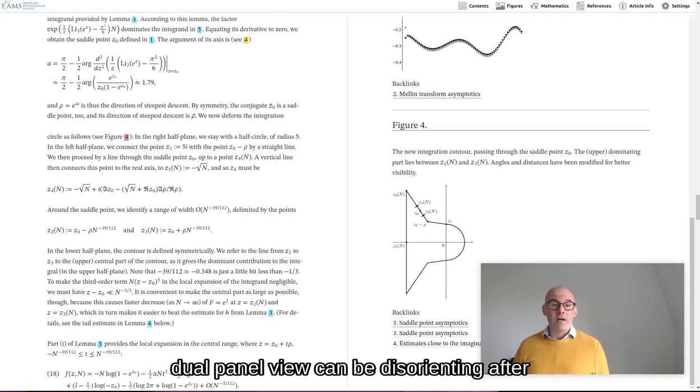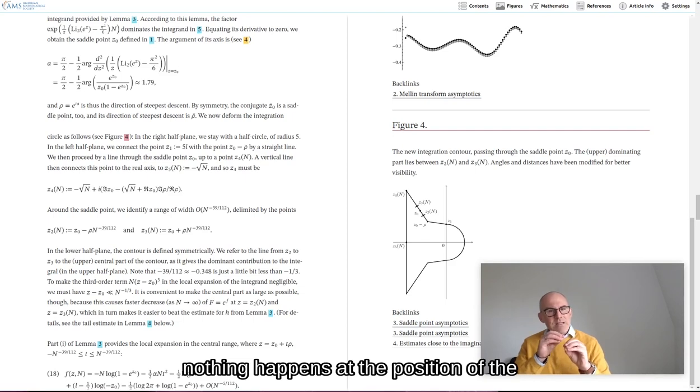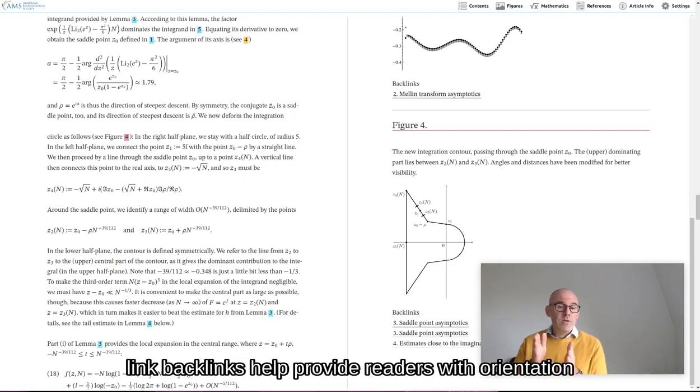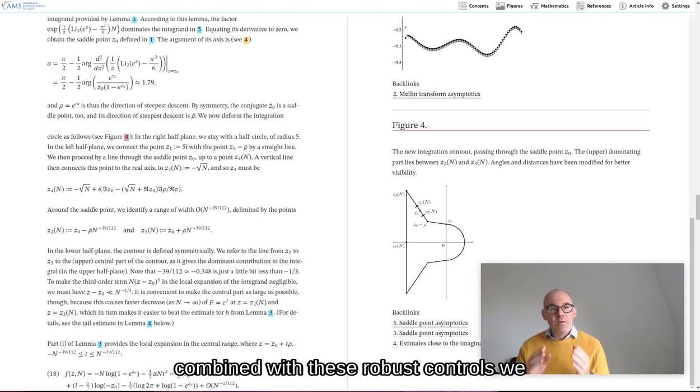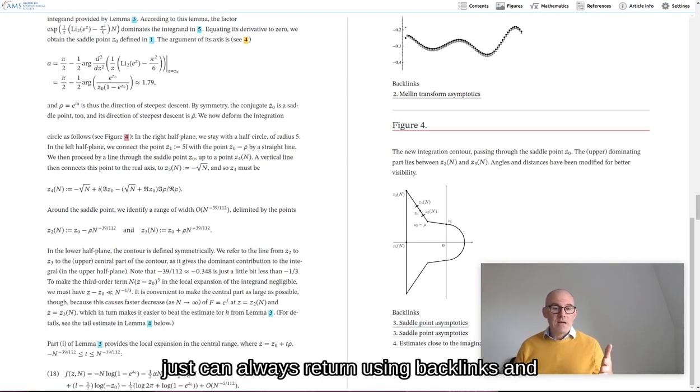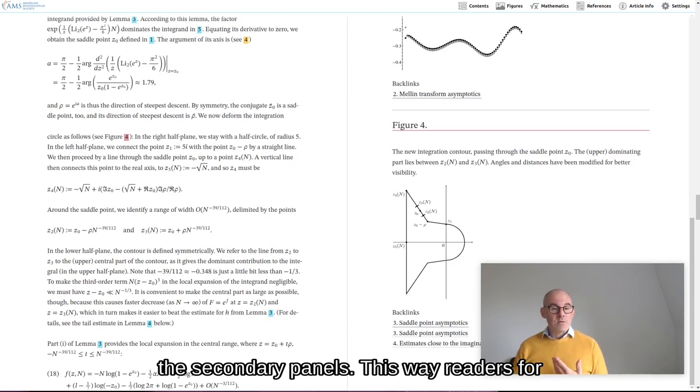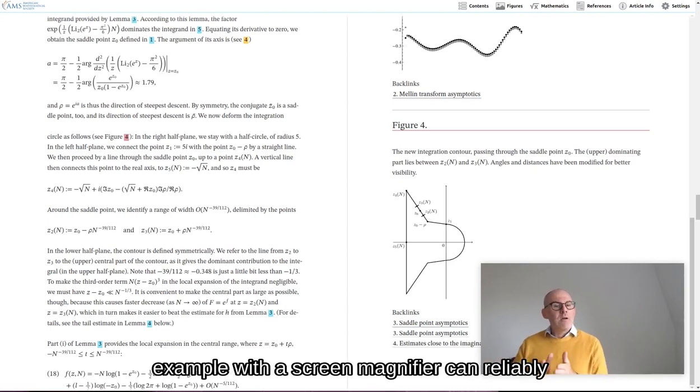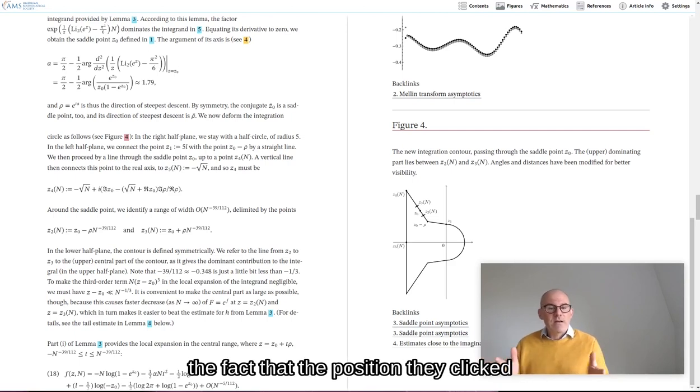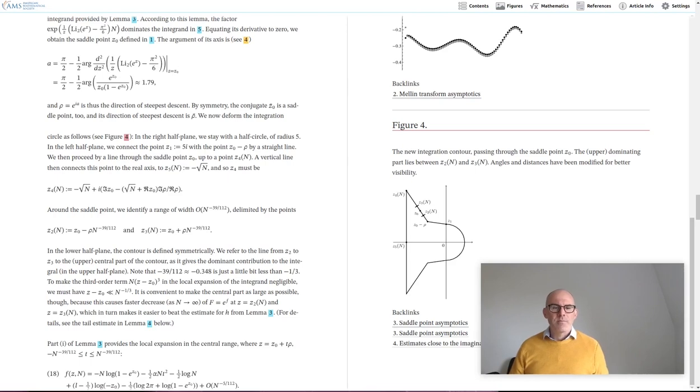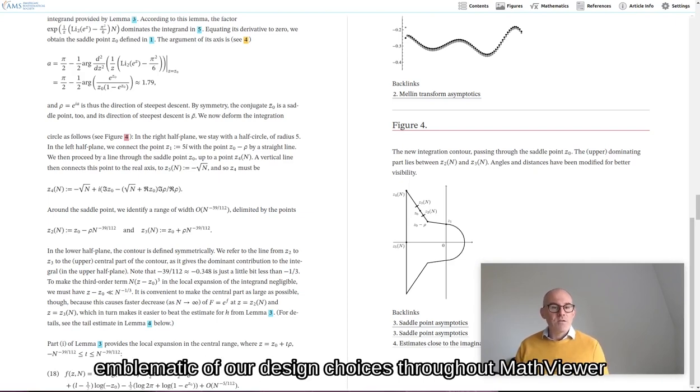Backlinks are important because a dual panel view can be disorienting. After all, it's really a kind of anti-pattern to click on a link and nothing happens at the position of the link. Backlinks help provide readers with orientation here. We do believe it's overall a higher value to the readers to have a dual panel reading experience combined with these robust controls. Readers can always return using backlinks and at the same time we use very strict and reliable patterns for accessing the secondary panels. This way, readers, for example with a screen magnifier, can reliably find the position of the figure after clicking on a link in the main article content. Instead of being disoriented by the fact that the position they clicked on has not changed. All of these are examples of the considerations that come into play and are emblematic of our design choices throughout MathViewer.